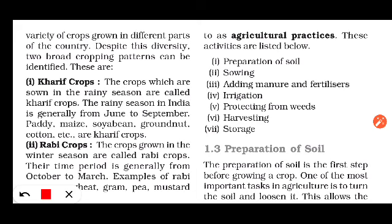To repeat: Kharif crops are the crops which are sown in the rainy season and are cut in the month of September. Generally their time span is from June to September. Examples of Kharif crops to remember: paddy, maize, soya bean, groundnut, and cotton — all these are Kharif crops.